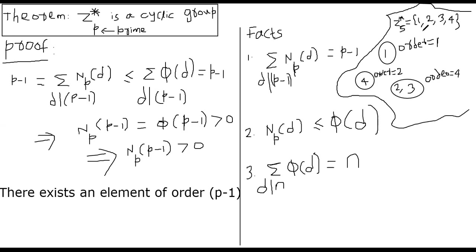Remember, each element has some order. We also proved that the order of an element divides the order of the group. So the possible orders for z*5 can be 1, 2, or 4, because 1 divides 4, 2 divides 4, and 4 divides 4. The order of z*5 is 4.